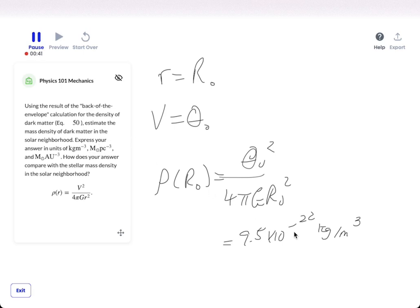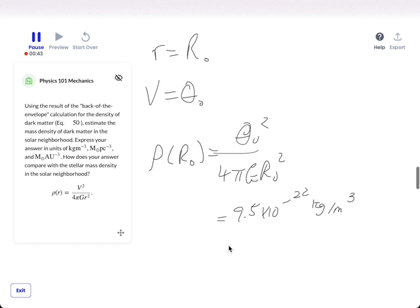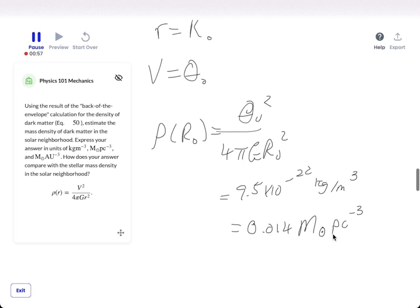Okay, let's go ahead and do some conversions. Kilogram per meter cubed, when I convert that into a mass of the sun, I get 0.014 times the mass of the sun, pc negative 3, parsecs to the negative 3rd.